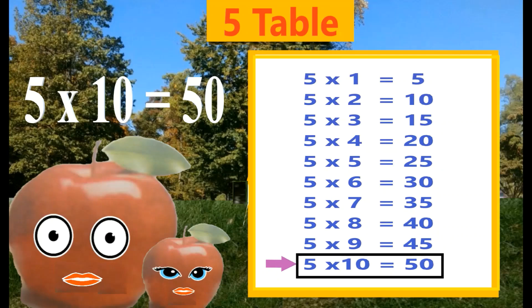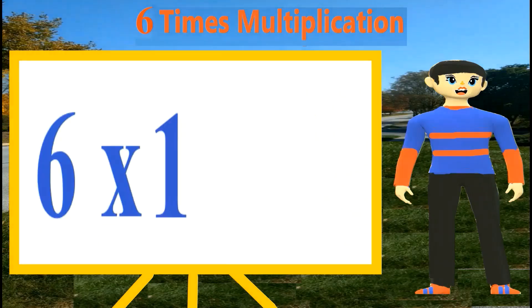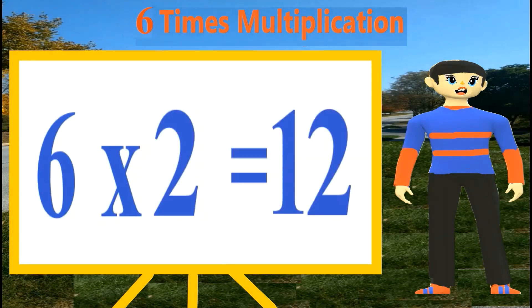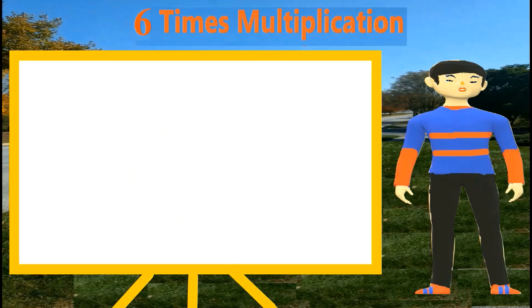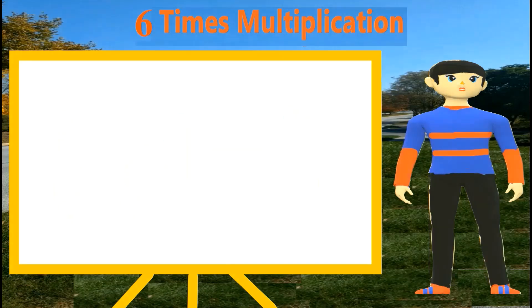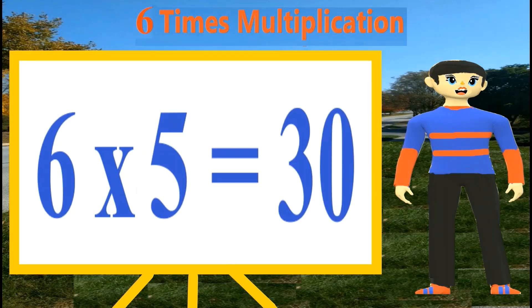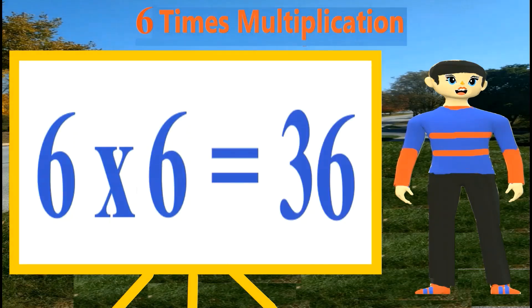Six ones are six. Six twos are twelve. Six threes are eighteen. Six fours are twenty-four. Six fives are thirty. Six sixes are thirty-six.